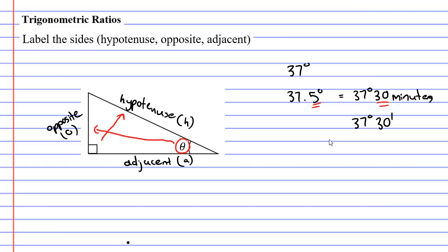We've got other decimals that can be represented using this degrees, minutes, and also seconds notation. Let's take, for example, 37.25 degrees. Now, 0.25 represents a quarter. And if you think a quarter of an hour is 15 minutes, so this would really be 37 degrees and 15 minutes.